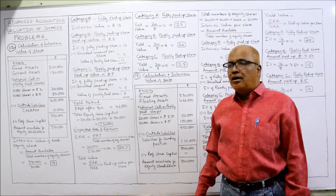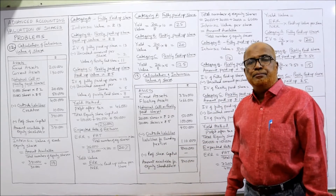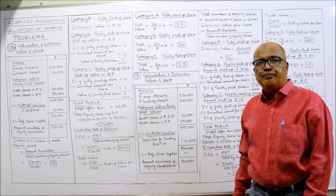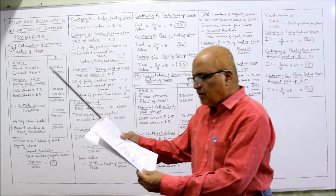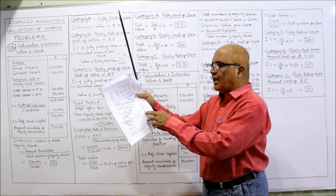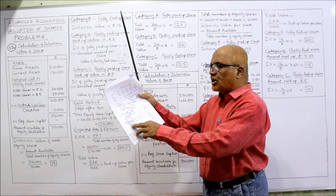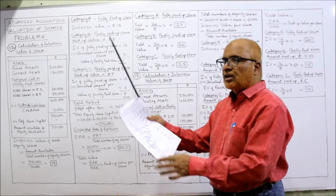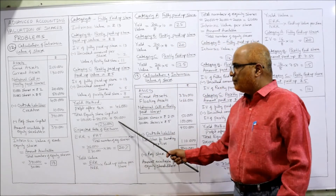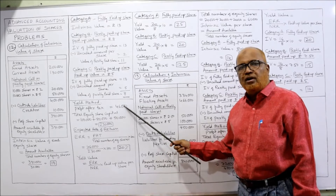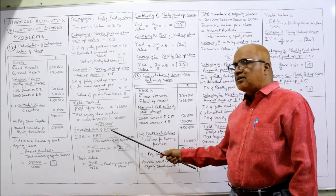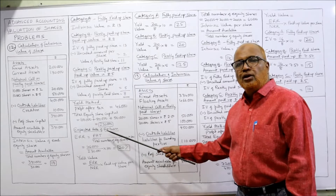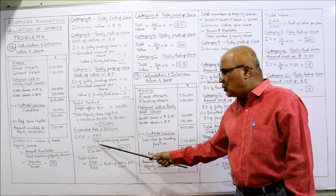For yield value, we find the profit after tax, which is given as 46,000. Total equity share capital: 10,000 shares fully paid = 1 lakh; 10,000 shares at 8 rupees paid up = 80,000; 10,000 shares at 5 rupees paid up = 50,000. Total equity share capital = 2,30,000. On 2,30,000, profit earned is 46,000. We calculate the expected rate of return (ERR) for the yield value.